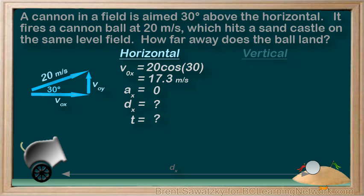Moving to the vertical motion of the cannonball, we have V0y. From our vector diagram, again, we can see that this one would be 20 sin 30. And we can calculate that.